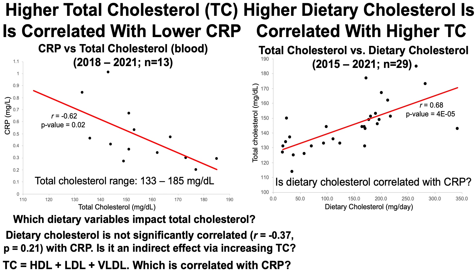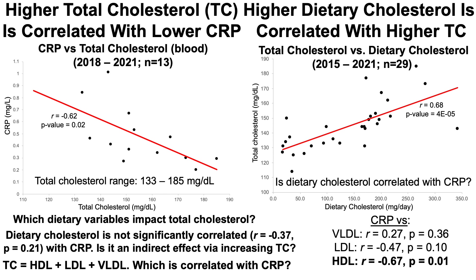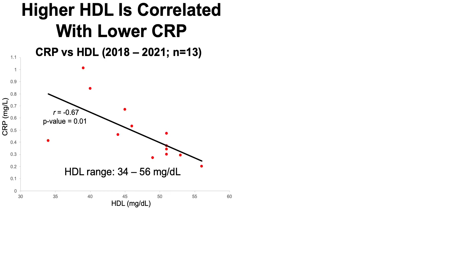Total cholesterol equals the sum of HDL, LDL, and VLDL — so which of these are correlated with C-reactive protein? VLDL is not correlated with CRP; the p-value is higher than 0.05. LDL is relatively close to significance with a p-value of 0.1. But higher HDL is inversely correlated with C-reactive protein, and based on the p-value, that's a significant correlation. The higher my HDL, the lower the CRP.